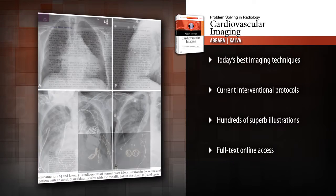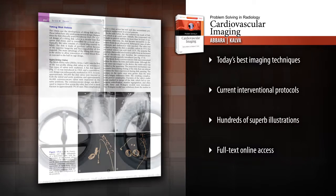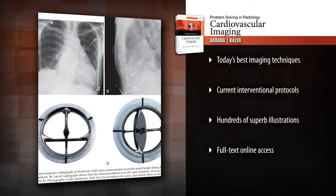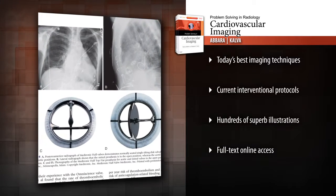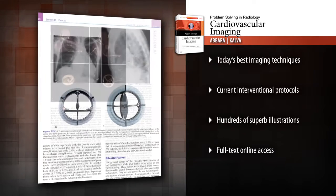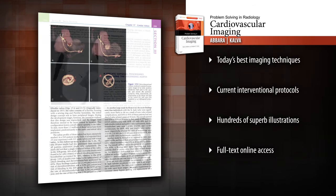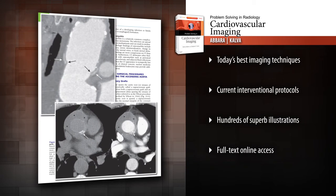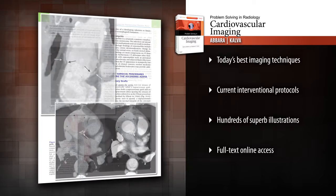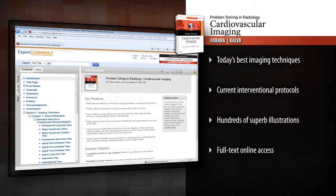Make the most effective use of today's imaging techniques, including PET and SPECT. Perform effective interventions using the newest grafts, stents, and coils. See conditions as they appear in practice with more than 2,350 images detailing anatomy, normal anatomic variants, and pathology.